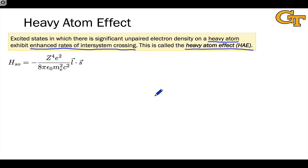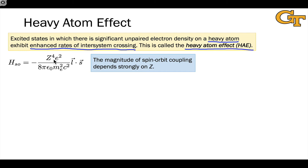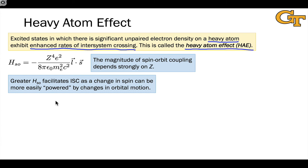The heavy atom effect comes from the fact that if we look at the perturbation operator or Hamiltonian that couples a change in spin to a change in orbital configuration, this equation depends profoundly on the atomic number Z. The greater Z is, the larger this term becomes. The only thing to pay attention to is that Z to the fourth appears, so the heavier the atom, the larger is this spin-orbit coupling term, and the faster intersystem crossing gets, because a change in orbital motion at or near the heavy atom can more easily power changes in spin.